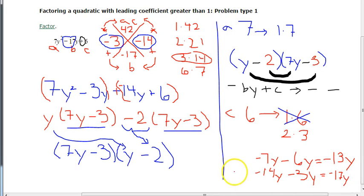And this is my answer. Y minus 2, 7y minus 3. Now you can see you get the same answer doing both methods. So you use the one that makes the most sense to you. I hope this helped.